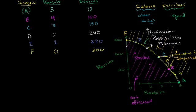A point over here — let's say this point right over here — you have not achieved productive efficiency, because you can get more rabbits without having to give up any berries and get to scenario B. Or you could get more berries without giving up any rabbits and get to scenario D. So this right over here is inefficient.